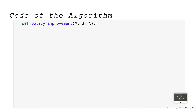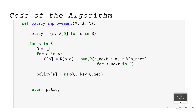In the policy_improvement function, we find the best policy for given value functions. We first initialize a dictionary called policy. Then, for each state S, we update the variable policy by finding the argmax of the expression q over action a. This is the expression from the policy improvement step shown earlier. Lastly, we return the variable policy as output.